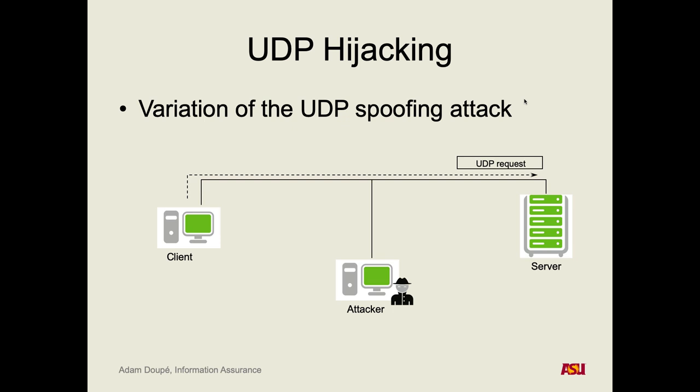Question: how would the attacker know that the client sent that UDP request if they're not in the loop of the server? Yes — it's probably similar to what we talked about earlier. Can we just spam-send the message from the DNS server we think we're asking: 'this is Google's IP, this is Google's IP' over and over and wait for the client to ask and receive our reply?